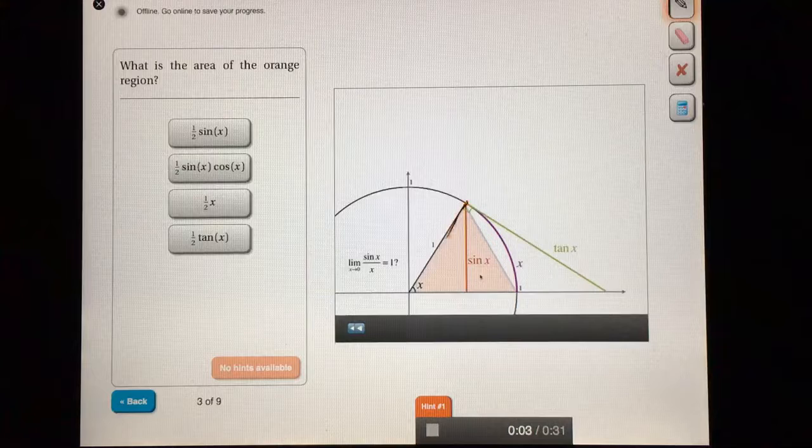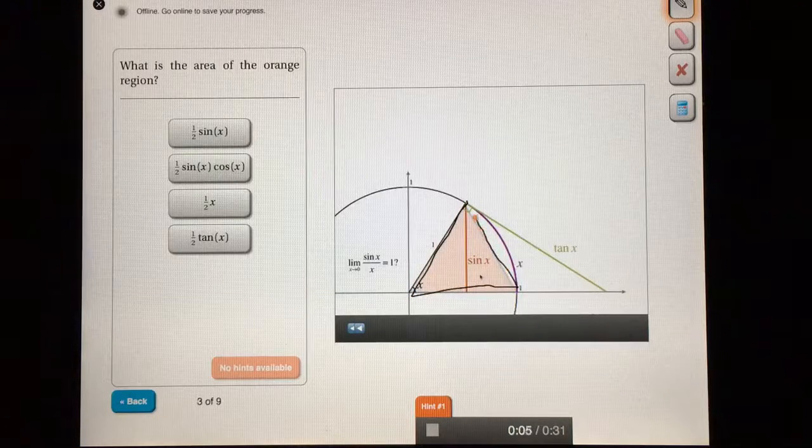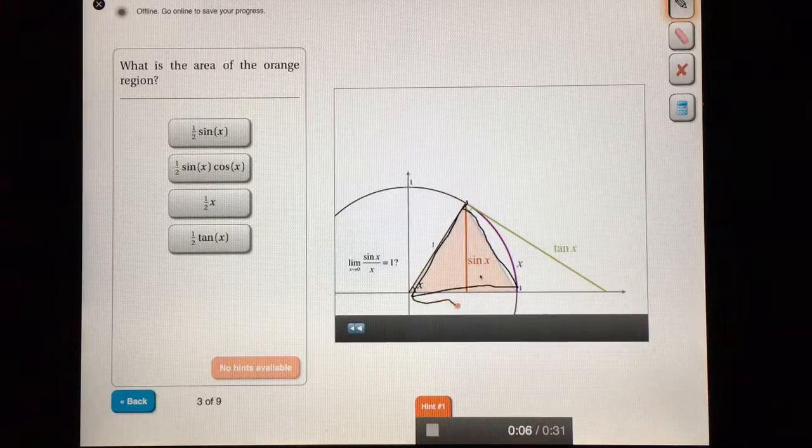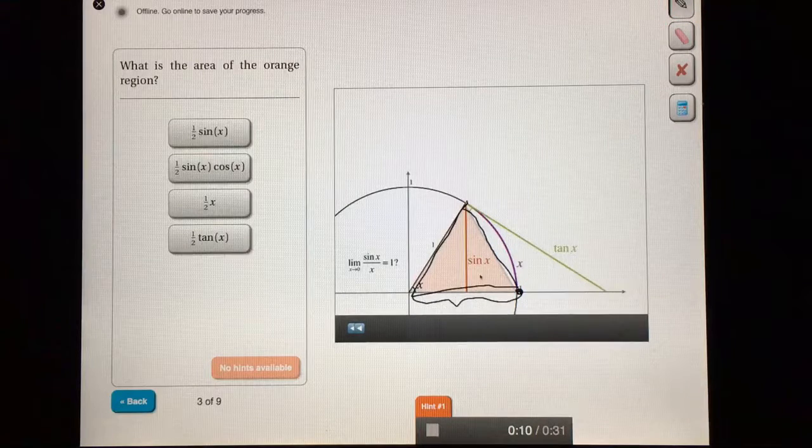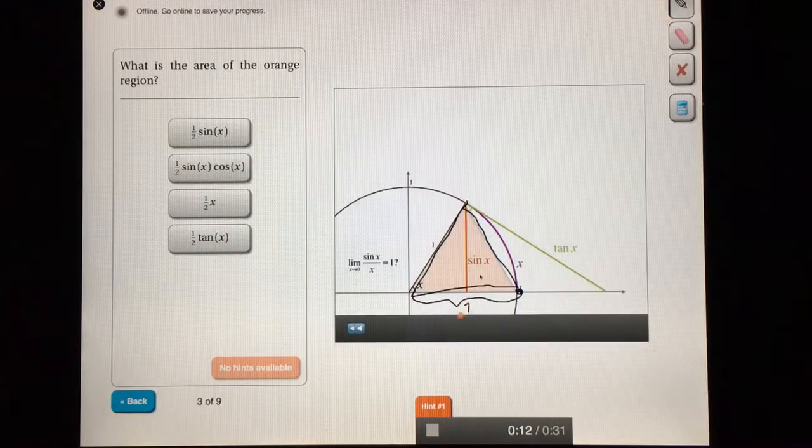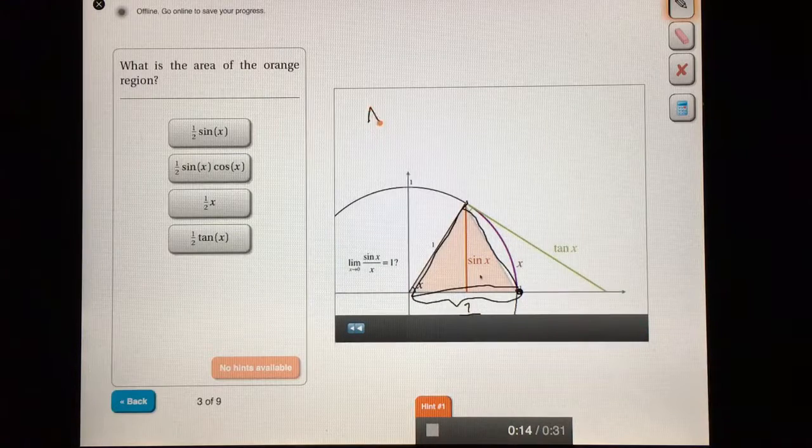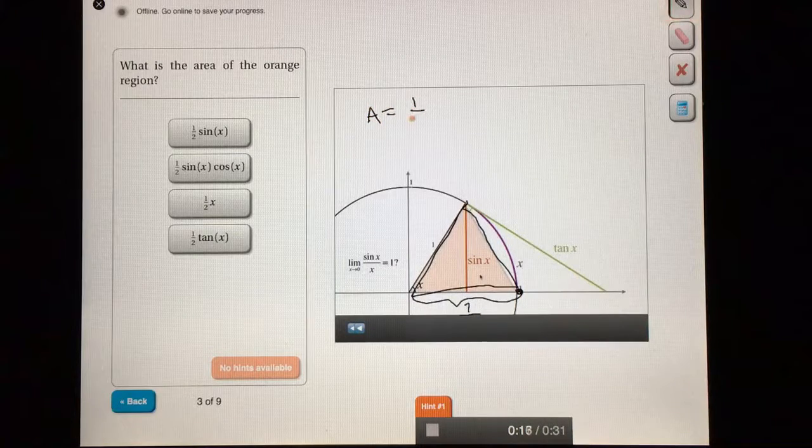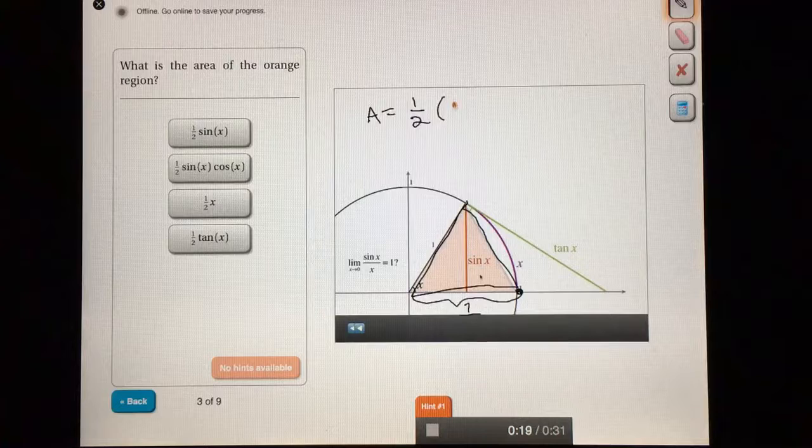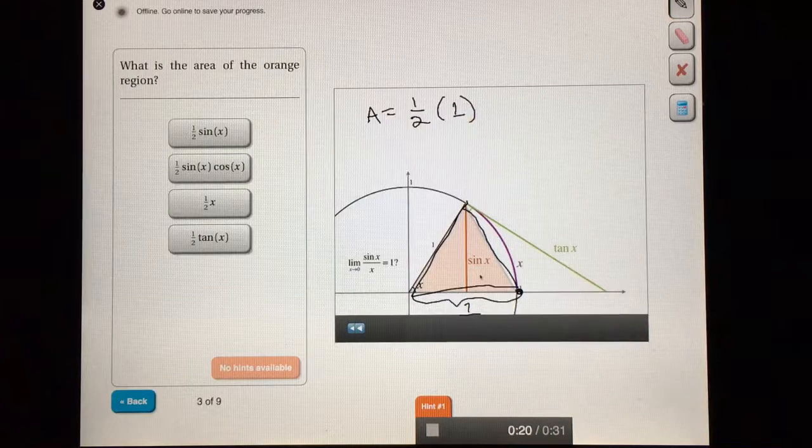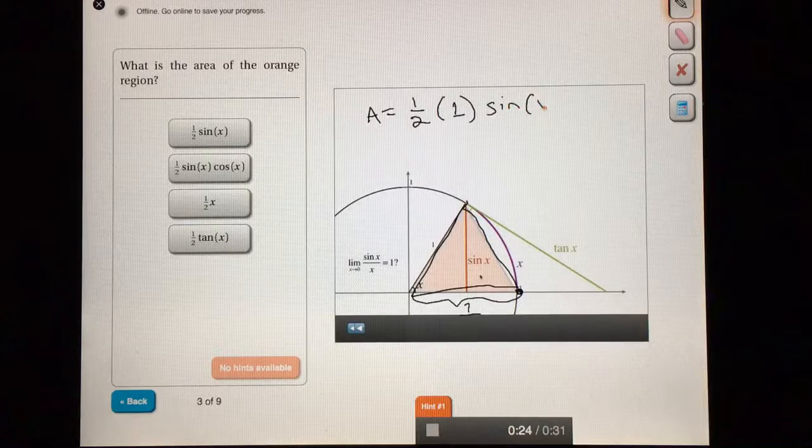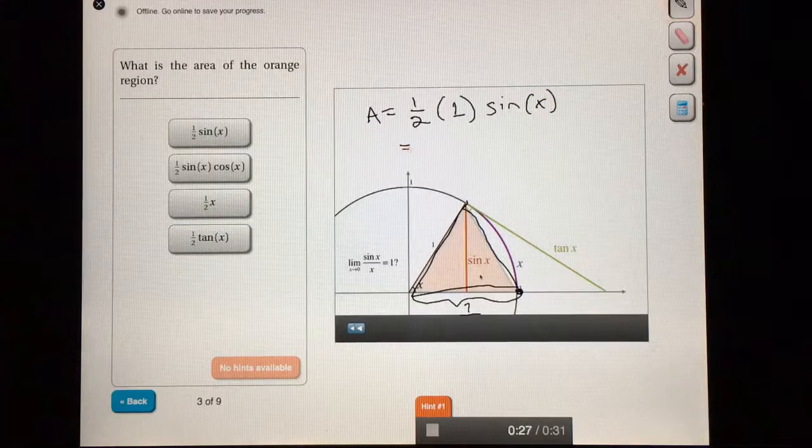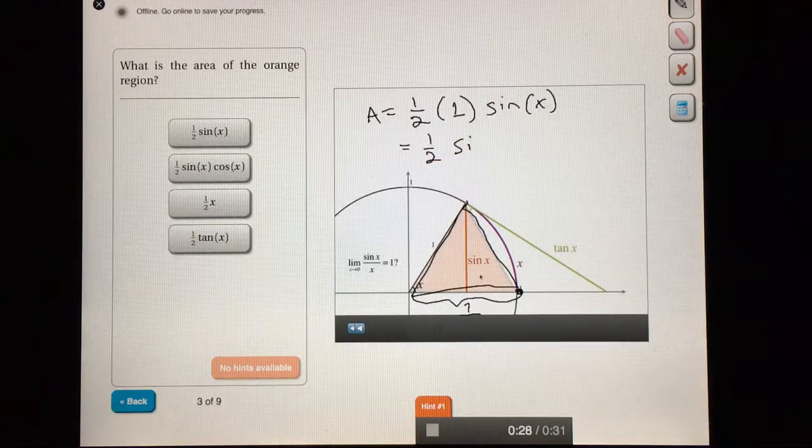So what's the area of this orange region here? The orange region is a triangle. The base here is the radius of the circle. You'll notice that it ends on a circle. And that circle has radius one, so the base is one. So the area is one-half times the base, which is one, times the height, which we said is sine of x, or one-half sine of x.